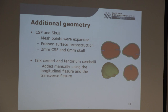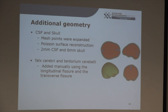When segmenting the MRI data for the adult head experiments, because they were T2 MRIs it was quite hard to differentiate between the CSF and the skull. So I segmented the brain and then expanded the outer nodes to artificially create the cerebrospinal fluid and also the skull. The falx cerebri and tentorium were manually added using the longitudinal and transverse fissures seen on the brain segmentation. Once set up, the model showed the brain in red, the cerebrospinal fluid in blue, and so on.